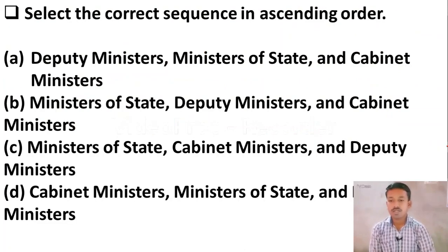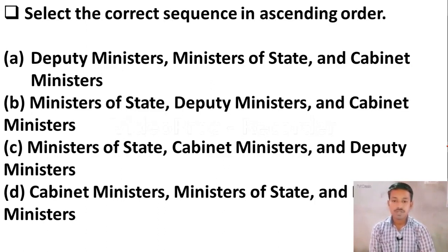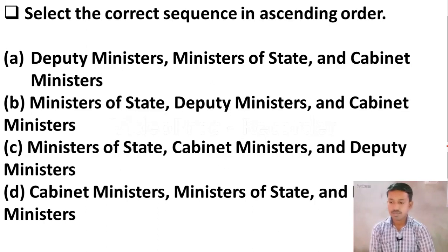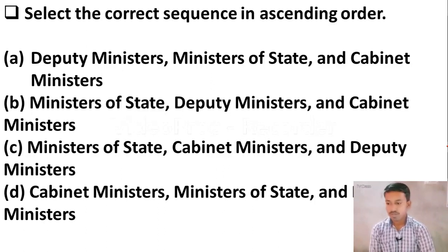Next question: Select the correct sequence in ascending order. Option A: Deputy Ministers, Ministers of State, and Cabinet Ministers. Option B: Ministers of State, Deputy Ministers, and Cabinet Ministers. Option C: Ministers of State, then Cabinet Ministers, and then Deputy Ministers. Option D: Cabinet Ministers, Ministers of State, Deputy Ministers.